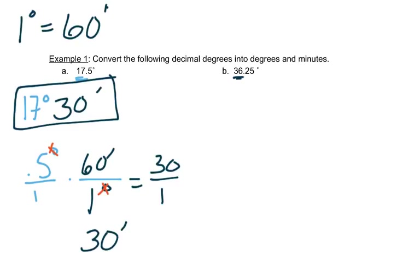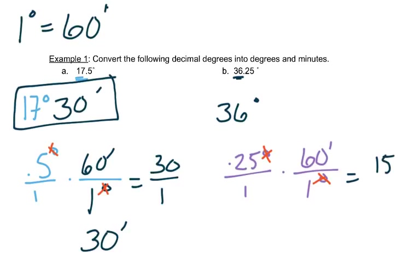Let's do the same for part B. We'll start with 36, that's our number of degrees. We'll take 0.25 degrees over 1 times 60 minutes over 1 degree, and again we put the degrees in the bottom because the first fraction has the degrees in the top and that's what makes things cancel out. If we multiply straight across we get 15 minutes over 1 or 15 minutes.